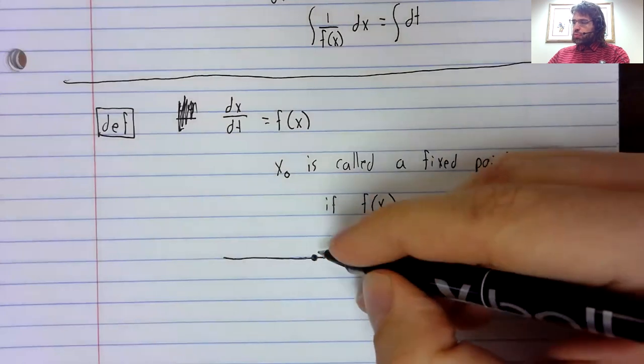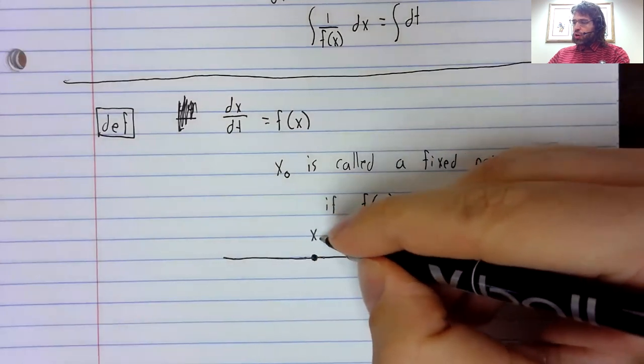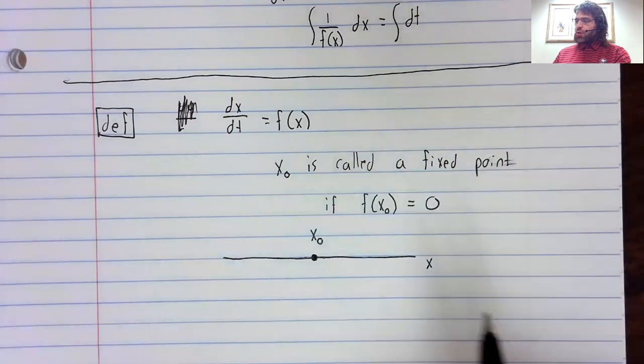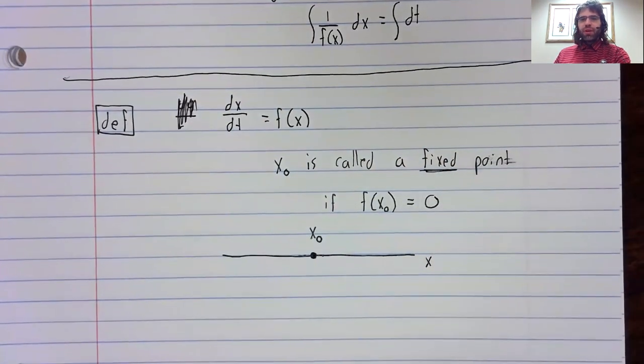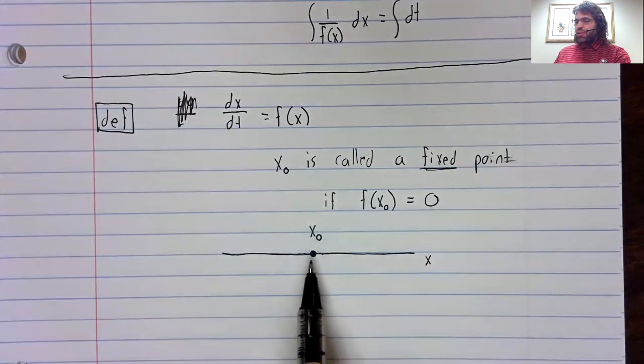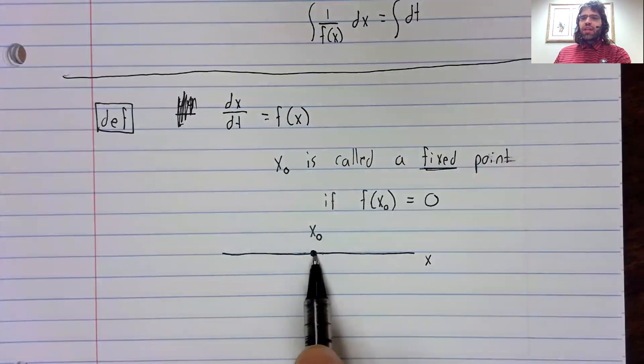we're not moving at all. So fixed comes from the fact that if x equals x₀, then as time passes, x stays at x₀. It's fixed here. It doesn't move.